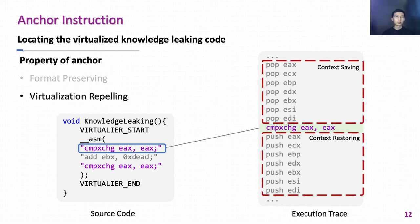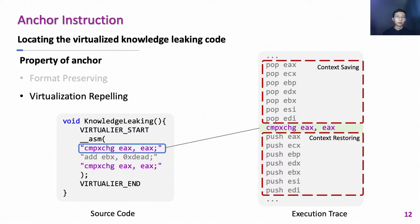The second condition is virtualization repelling. When the process-level virtual machine cannot emulate an instruction, the VM has to be suspended or terminated and switched to the native environment. After executing the anchor instruction, the VM will resume execution. Therefore, the anchor instruction forces the obfuscator to generate multiple context-rich instructions. The context-saving and context-restoring instructions appear around the anchor instruction. CIA attackers can apply dataflow analysis to extract virtualized instructions that contribute to the native context.